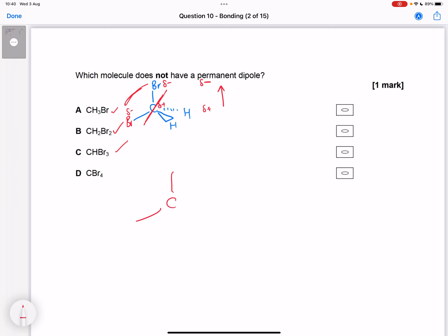But as soon as we've got all four as bromines with no Hs, the polar bonds are arranged symmetrically and cancel out. So CBr4 is the only one where the molecule doesn't have a permanent dipole because it's symmetrical.